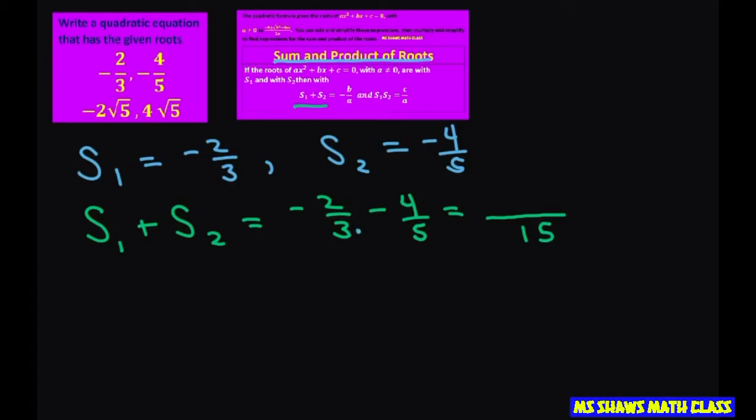To get 15, we're going to multiply this by five. So that's going to be negative 10. Multiply this by three. So multiply this by three and you get negative 12.